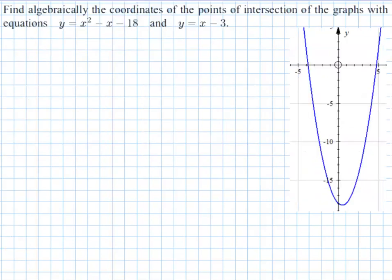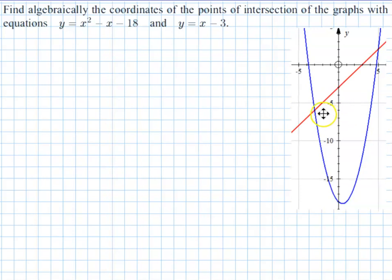So how do we work out the intersection of our quadratic here, x squared minus x minus 18, and the line y equals x minus 3? So graphically if we were to draw x squared minus x minus 18, we have the curve here. Then if we draw on top of that y equals x minus 3, we can see we have in this case two points of intersection.